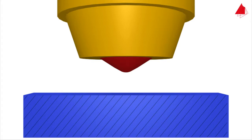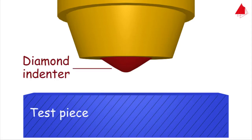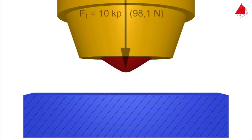In the process variant scale C, a rounded cone made of diamond is used as an indenter. In step 1, the diamond cone is pressed onto the test piece surface with a minor force of 10 kiloponds. The depth of indentation under this preliminary load is the reference point.